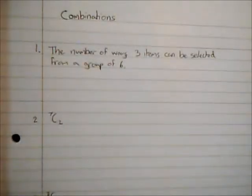In this video we're going to look at how you can work out the number of combinations of picking a certain number of items from a large group. Initially we're going to look at the number of ways three items can be selected from a group of six.